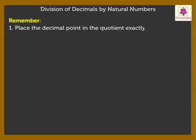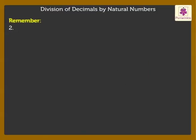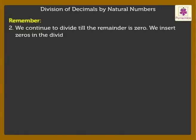Kids, remember: 1. Place the decimal point in the quotient exactly above the decimal point in the dividend. 2. We continue to divide till the remainder is 0. We insert 0s in the dividend to complete the division.